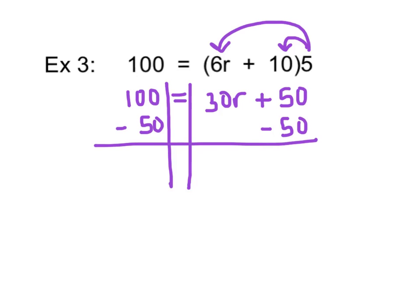Our first inverse operation is going to be to subtract 50 on both sides of our equation. Our inverse operations, plus 50, minus 50, are going to cancel each other out. We'll rewrite what we have left over. 100 minus 50 is 50, equals 30R.